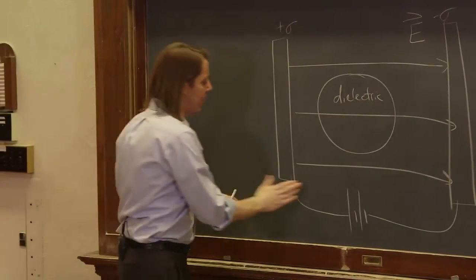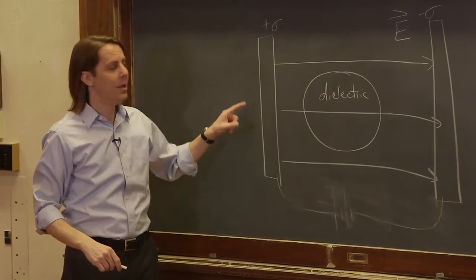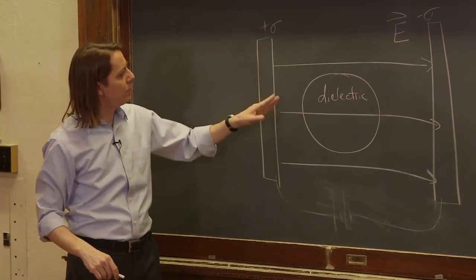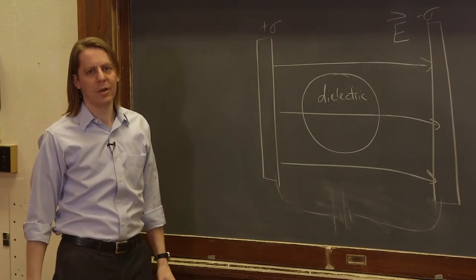Whereas if they're just planes of charge, then the field right here will never change. It has to be, or the field here, due to this will always be the same, because we have a constant charge density. So this will always create the same field right outside its surface.